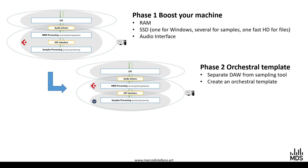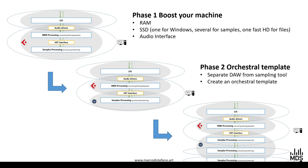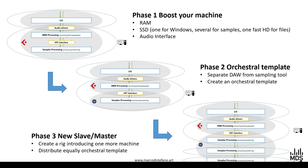If you want to know how I create this orchestral template, you can watch some of my videos on my channel, and I will post some new ones soon. Then there is Phase Three: if this is still not enough, go to a rig and introduce another PC — either a slave or a master depending on what you already have. Pay attention to distributing the orchestral template equally. Don't put all the libraries you use most on the same PC. For example, put strings on one PC and brass on another, with woodwinds on the same PC but on a different hard drive.